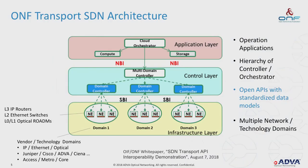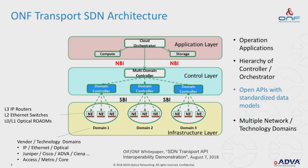Looking at the architecture again: the lowest infrastructure layer contains network elements — IP routers, Ethernet switches, and ROADMs (reconfigurable optical add-drop multiplexers) — organized into domains by technology and vendor. In the control plane, there is typically a hierarchy of domain controllers: a domain controller responsible for one domain, subtended to a multi-domain controller, which integrates into a cloud orchestrator also considering compute and storage resources. The key points are the controller hierarchy with open APIs and standardized models.